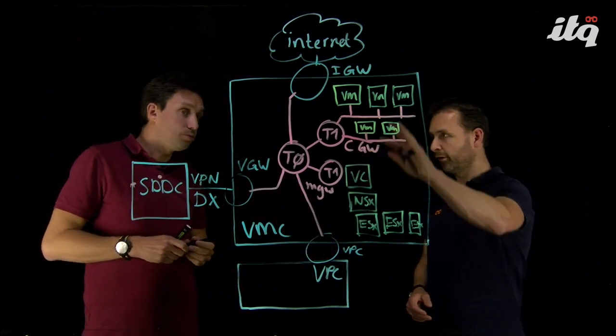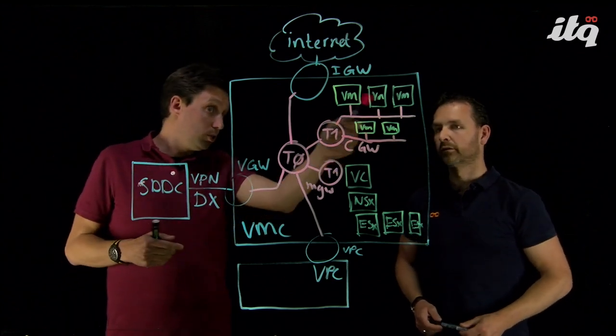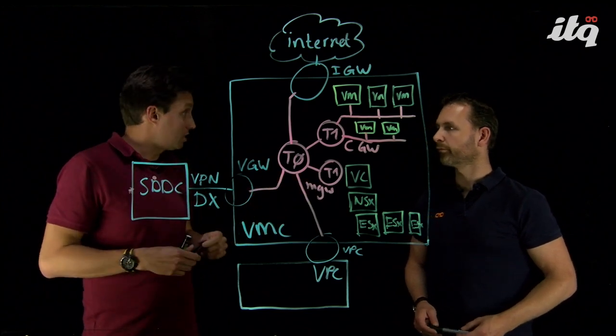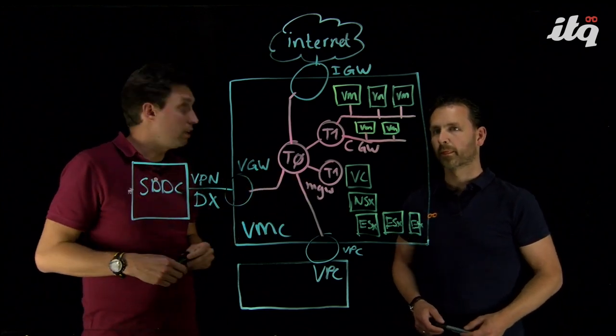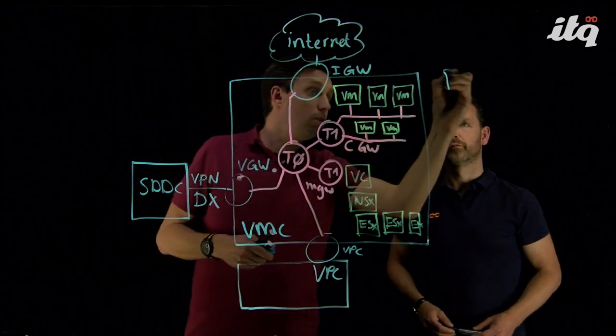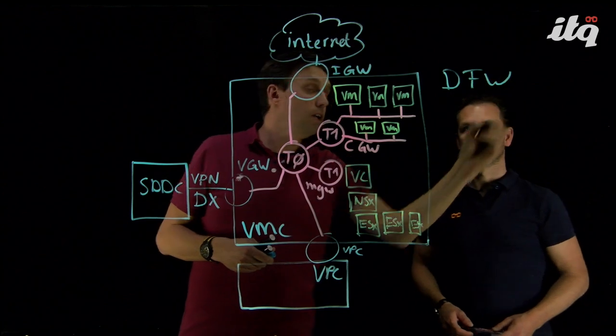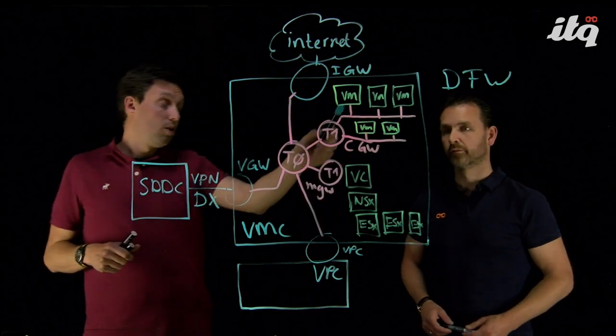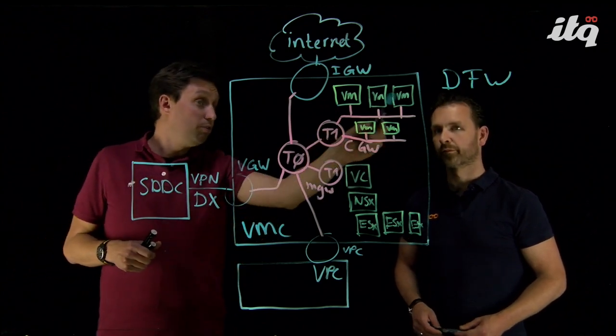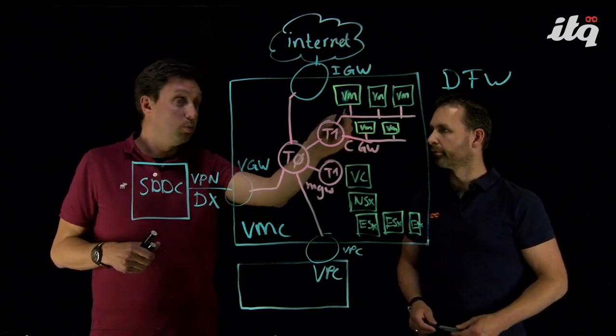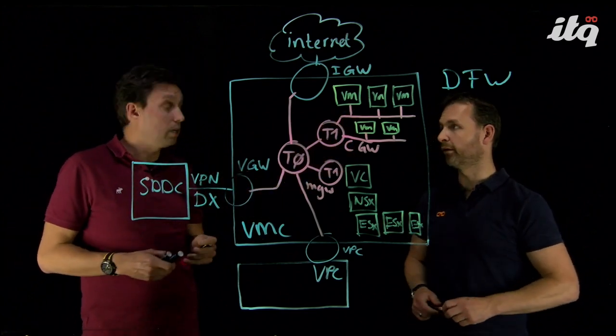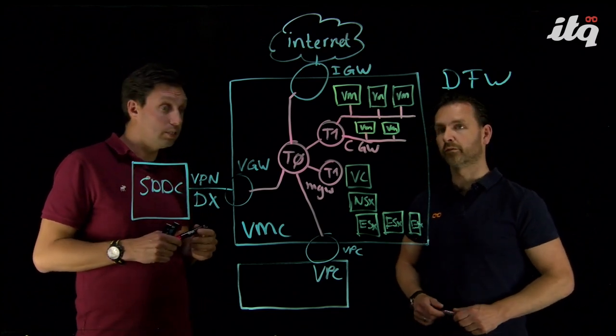So, how do you deal with security in such a model? Well, by default, you have the routing available here. But with the release of NSX-T as part of VMware Cloud on AWS, we also have the distributed firewall available in VMware Cloud on AWS. So, we can firewall what we call east-west traffic between the VMs in the same segment, but also between the VMs across these different segments. So, you can do micro-segmentation. You can do micro-segmentation in VMware Cloud on AWS. That's correct.